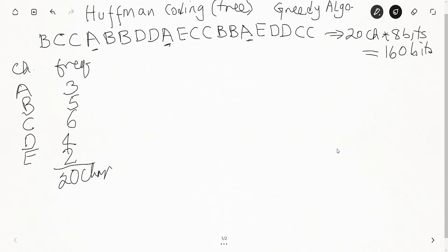We start by ordering characters from highest to lowest frequency: C has six, B has five, D has four, A has three, and E has two. These are the frequencies for each character before building the Huffman tree.